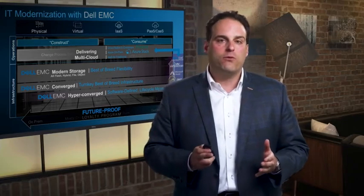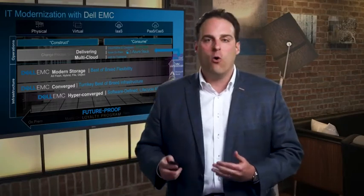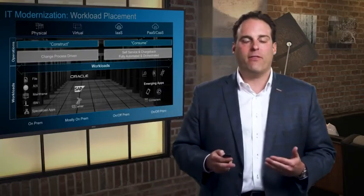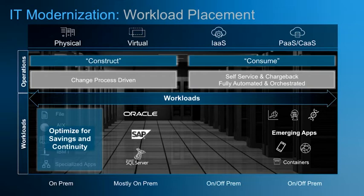We back it up with our future-proof storage loyalty program — the industry's best platform to protect investment as customers move from one world to the other over this multi-year, potentially multi-decade journey with the best partner in the business. With some contextual examples: file, Unix, mainframe, and IBMi are the specialized applications. We're really optimizing those for savings and continuity — increase the SLA, reduce the TCO. Nobody in the business does that better than Dell EMC. We continue to service what could be 20, 30, or in some cases 40% of enterprise workloads that still need to be optimized for a better SLA and lower TCO.